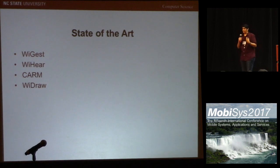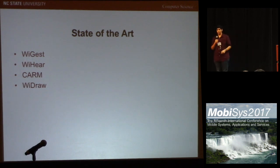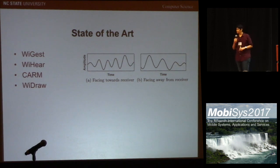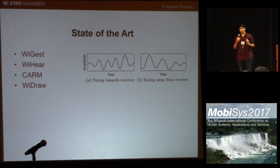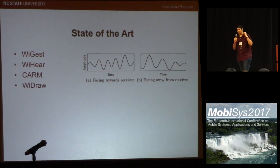While these existing schemes work great in the scenarios they were designed for, we believe the next step in making these schemes more practical and viable is to build a system that is independent of the position and orientation of the gesture. By position I mean where I am located — this is one position and this is another position. Orientation means the direction in which I face. Let's take a case of a simple push gesture. When facing towards the router and pushing my hand forward, I am reducing the distance between my hand and the router, so the amplitude decreases as distance decreases. While when facing away from the router the amplitude pattern changes.